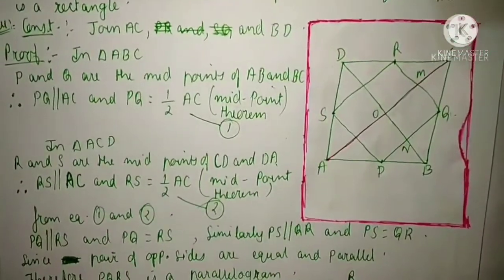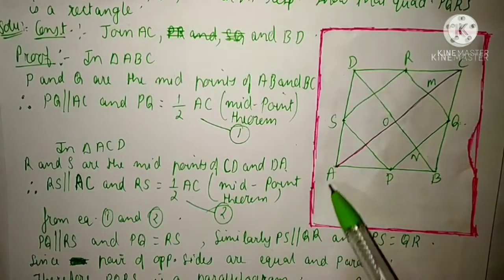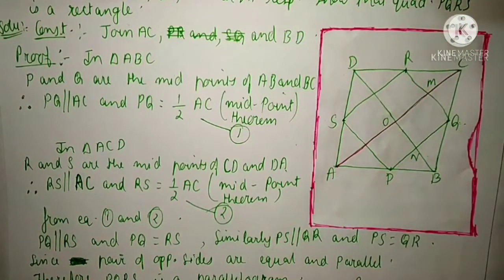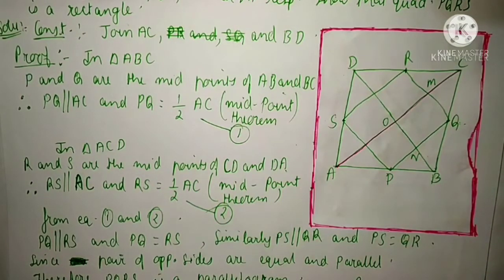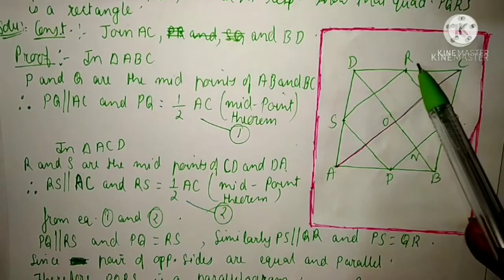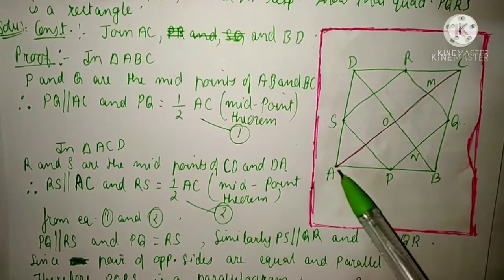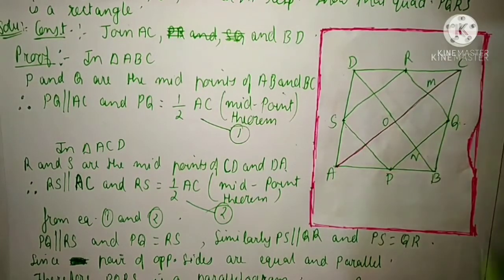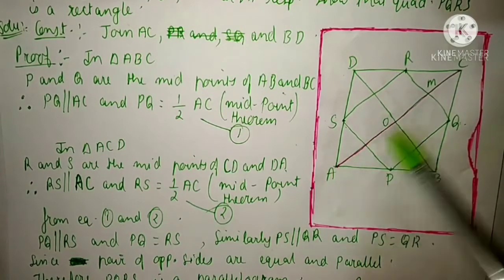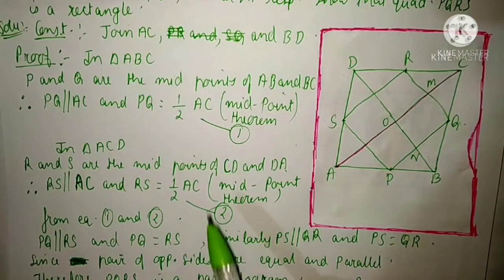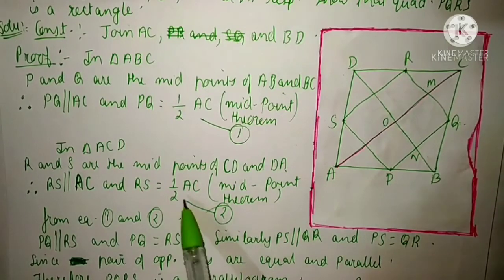Now see triangle ACD. In this also, R and S are the midpoints. So we will write: R and S are the midpoints of CD and DA. Therefore, RS will be parallel to AC and RS will be equal to half of AC, again by the midpoint theorem. Name this as equation number 2.